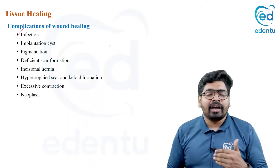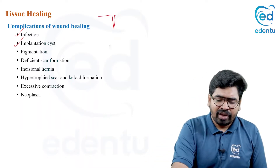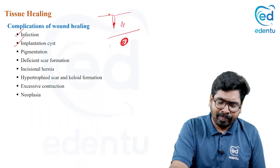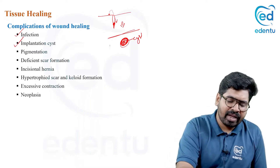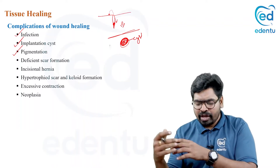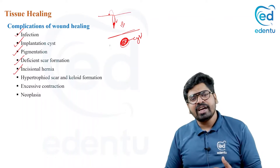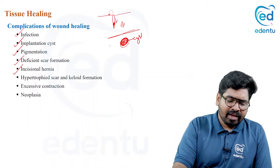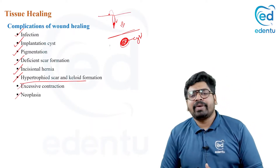Complications of wound healing include: infection of the wound; implantation cyst, where epithelial cells become entrapped in the wound and form a cyst over time; pigmentation of the scar area; incisional hernia with inward protrusion of organs; hypertrophic scar or keloid formation due to excessive collagen; excessive contraction; and rarely, tumor development at the site of trauma.